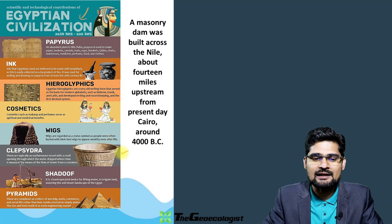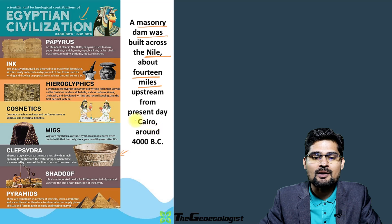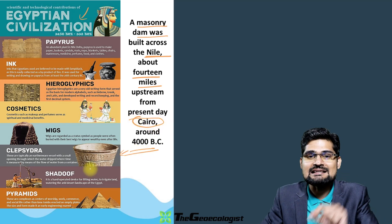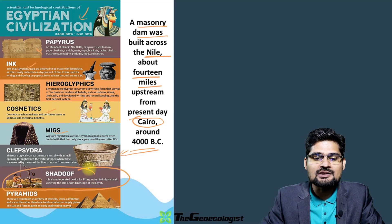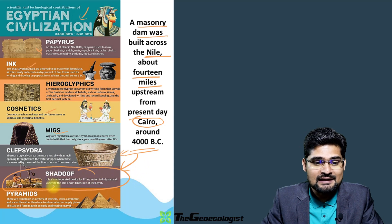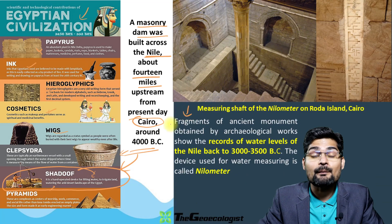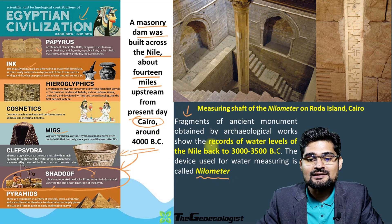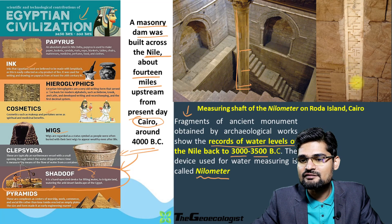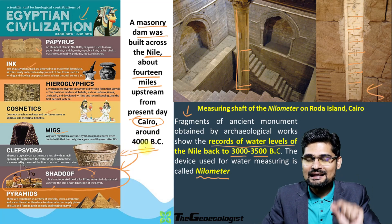Let's look at Egyptian civilization. The masonry dam built across the river Nile, about 14 miles upstream from present-day Cairo, was constructed around 4000 BC. Among Egyptian contributions we observe the shaduf — a hand-operated device for lifting water into irrigation channels. Crucially, the Nilometer was developed for measuring and recording water levels of the Nile back around 3000 to 3500 BC. This pillar had different levels marked — during flooding and during lean season — and it stands as an important hydrological evidence.